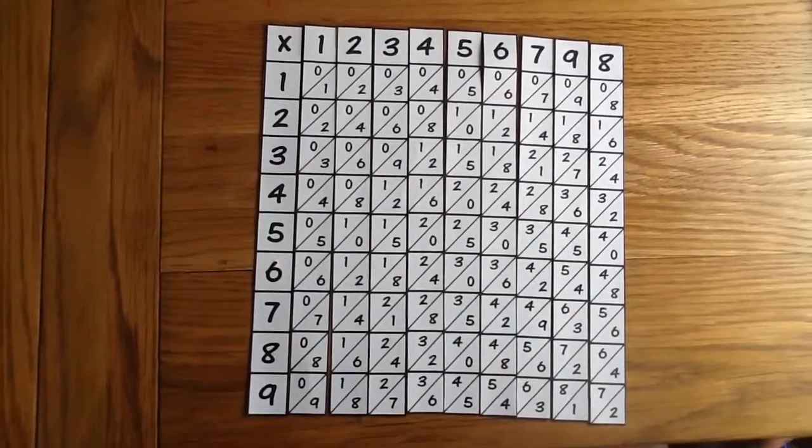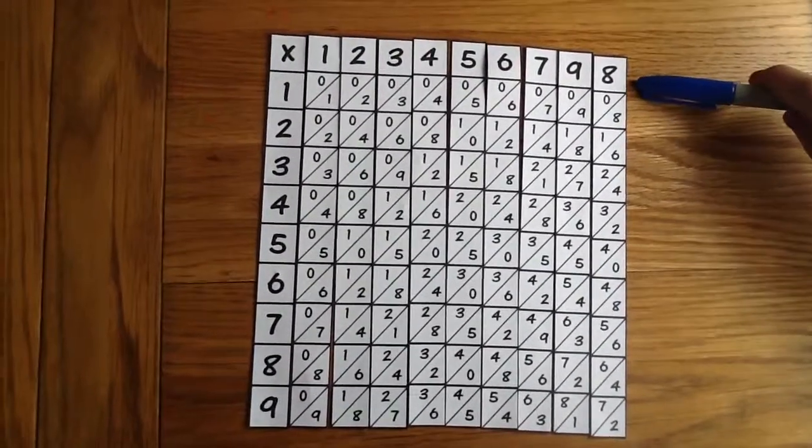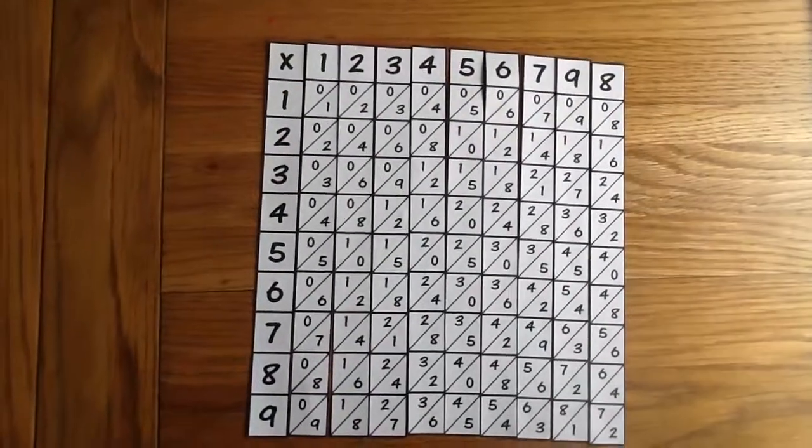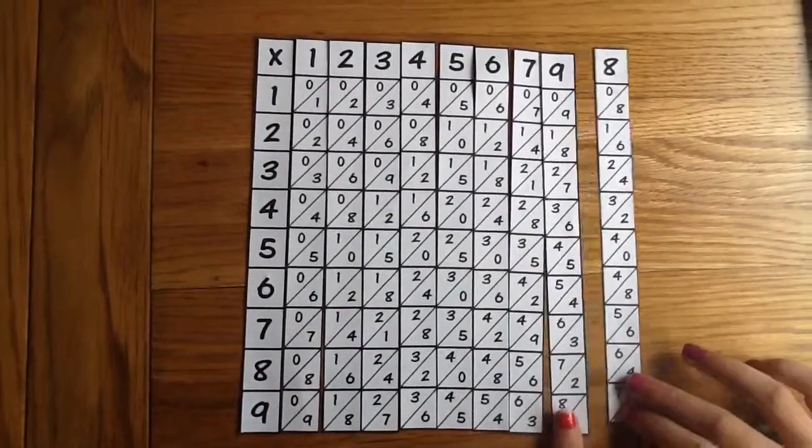Anyway, as you can see on the top row we have 1 to 9, although 8 and 9 is in the wrong place. And down the side we have 1 to 9.